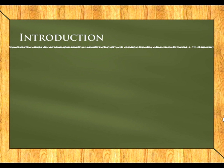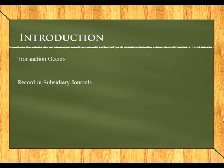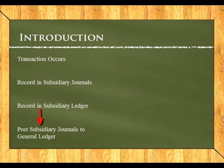Starting off with the introduction, let me remind you how things would normally happen. We would have a transaction — for example, if we sold goods on credit to debtor A. Smith, that transaction would be recorded in the subsidiary journals, in this case the sales journal, and would increase our debtors control. We would then record that same transaction in the subsidiary ledgers — the debtors ledger and the creditors ledger. All the subsidiary journals, such as the cash receipts, cash payments, and sales journals, would then be posted to the general ledger, affecting our debtors control and creditors control.